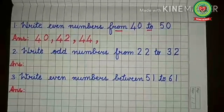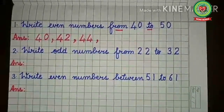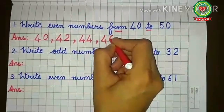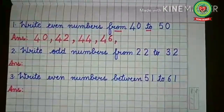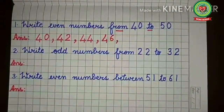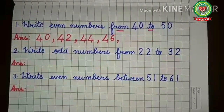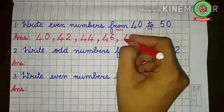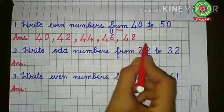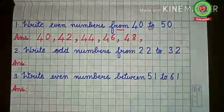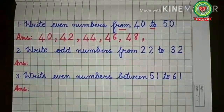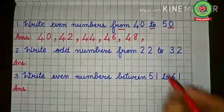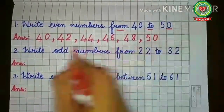Forty-six ends with six, which comes in the table of two, so we write forty-six. Forty-seven ends with seven, which does not come in the table of two, so it is odd. Forty-eight ends with eight, which comes in the table of two, so we write forty-eight. Forty-nine ends with nine — odd. Fifty ends with zero, so it is even. So the even numbers from forty to fifty are: 40, 42, 44, 46, 48, 50.